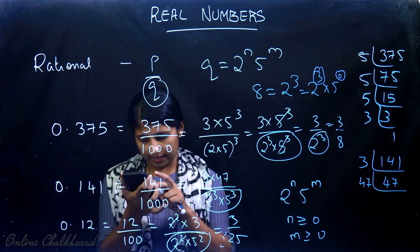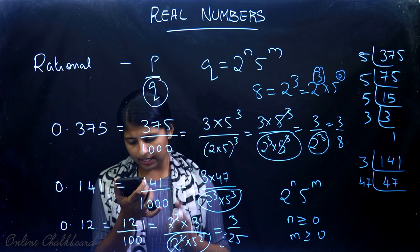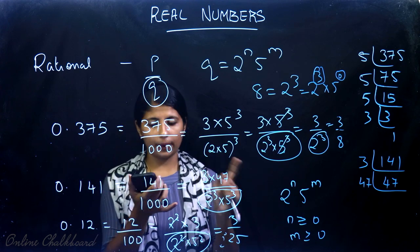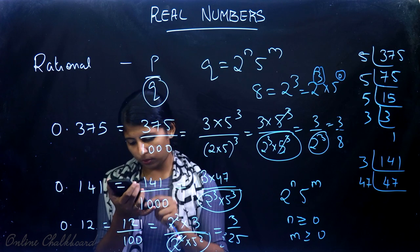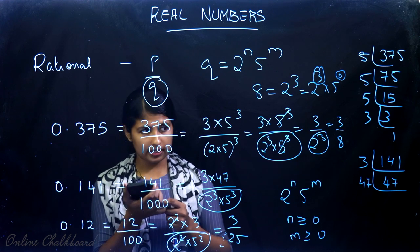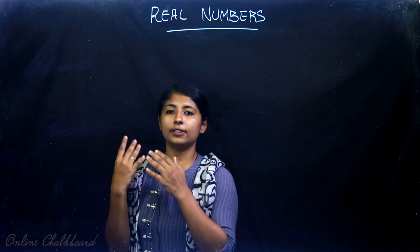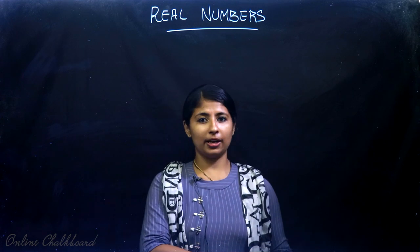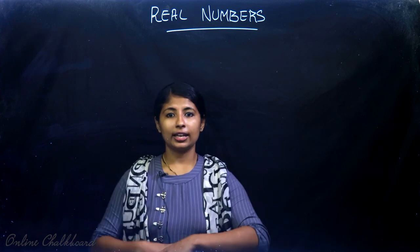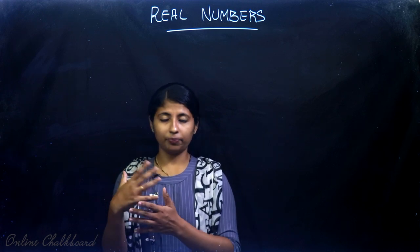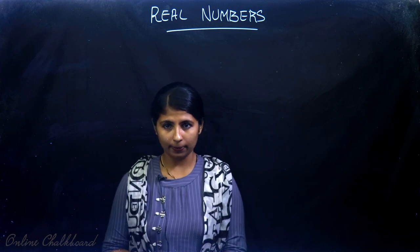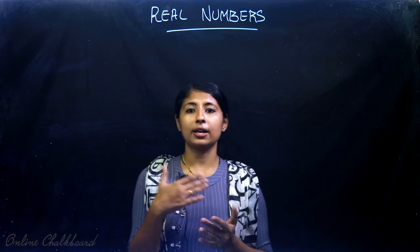Let me repeat the theorem: Let S be a rational number whose decimal expansion terminates. Then S can be expressed in the form P by Q where P and Q are co-prime, and the prime factorization of Q is of the form 2 raised to n into 5 raised to m where n and m are non-negative integers. Now a question arises — can this come in the reverse way? If P by Q is a rational number with Q having prime factorization 2 raised to n into 5 raised to m, will the decimal expansion terminate?